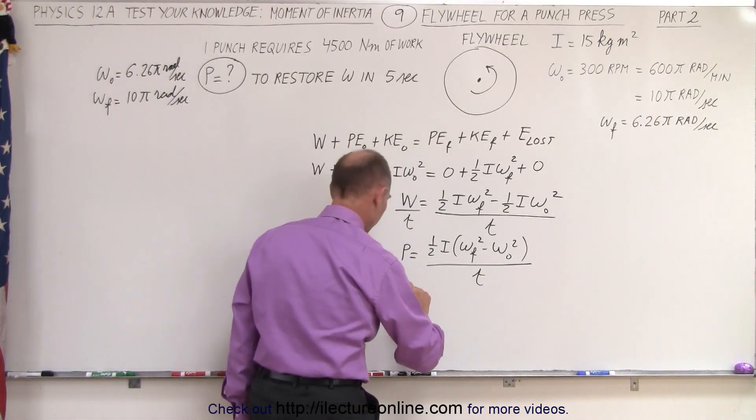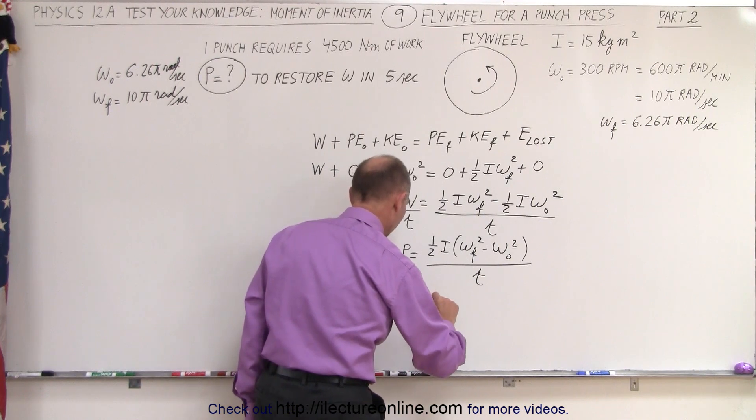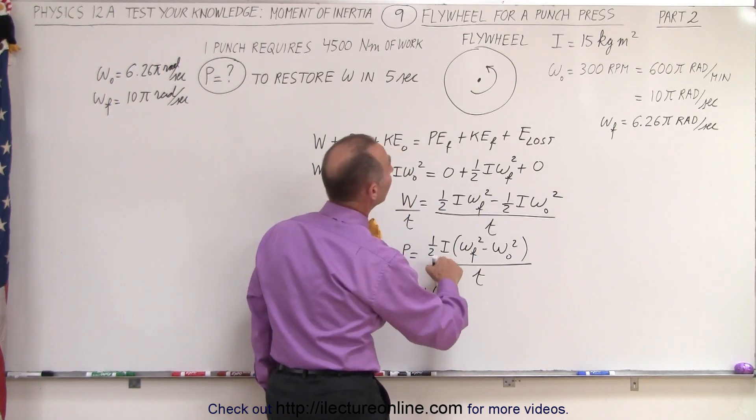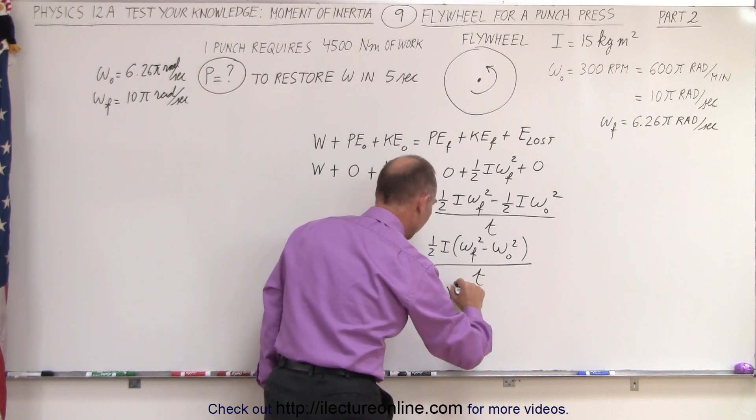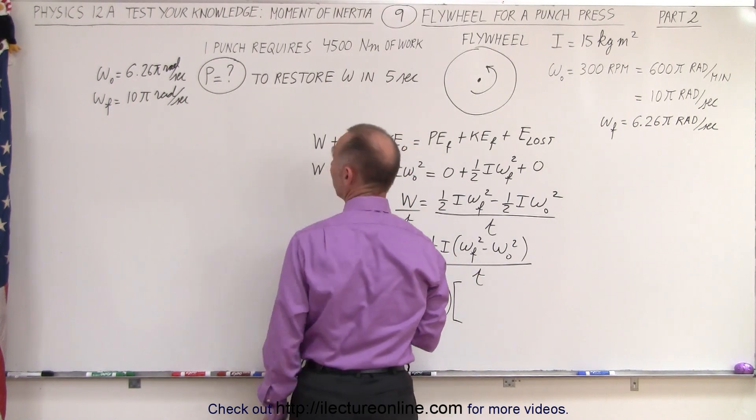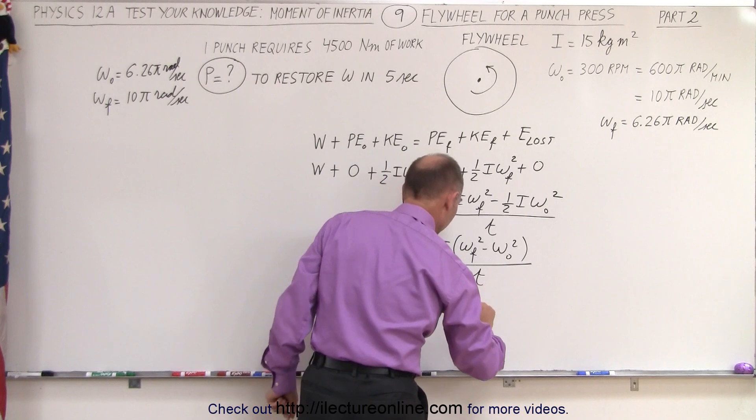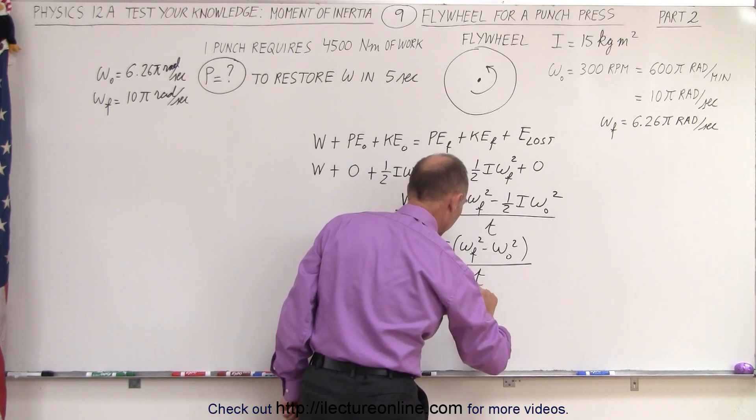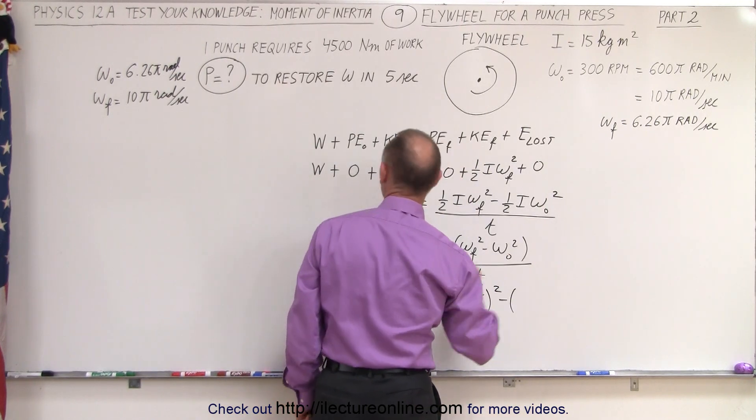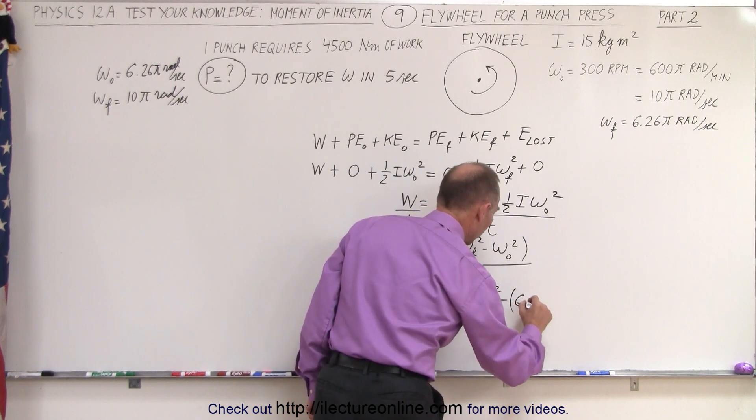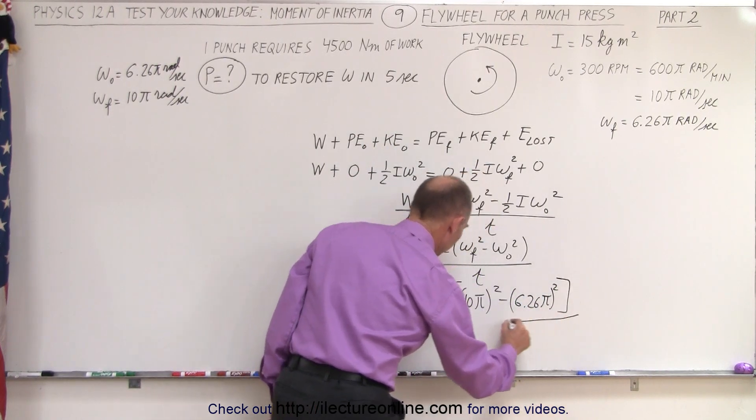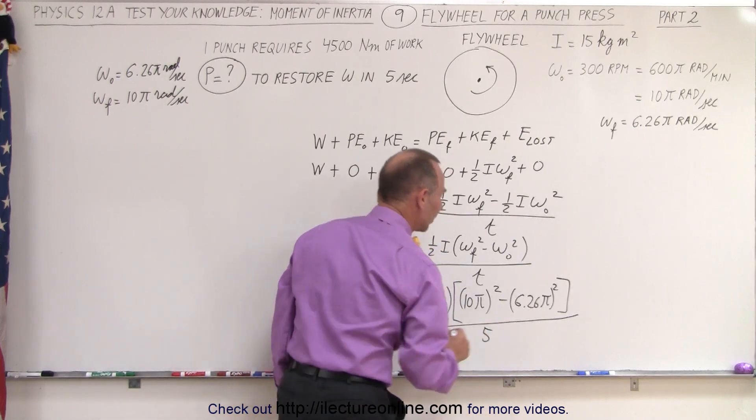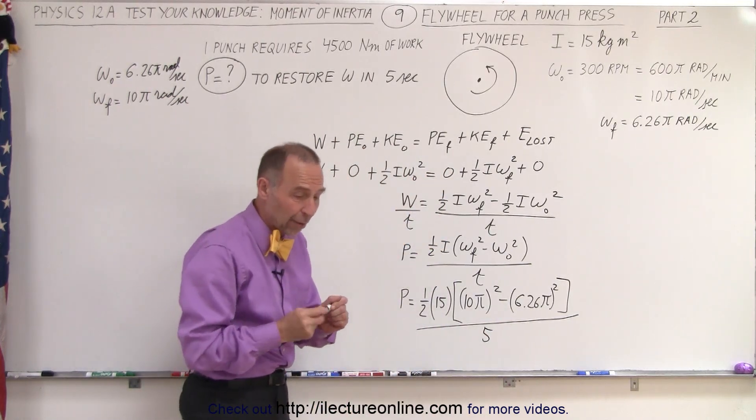Plugging in what I know, the power required will be equal to one half times i, which was given to be 15 kilogram meter squared, and omega final squared, that would be 10 pi, so 10 pi squared minus omega initial squared, which would be 6.26 pi squared, and the whole thing divided by 5 seconds.